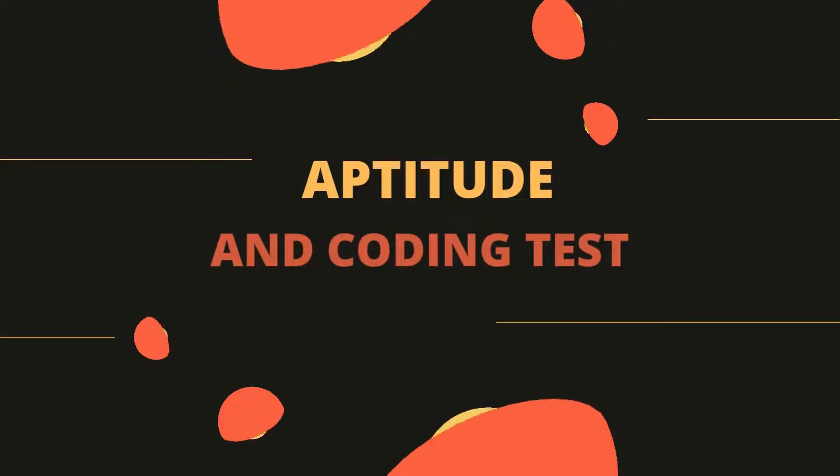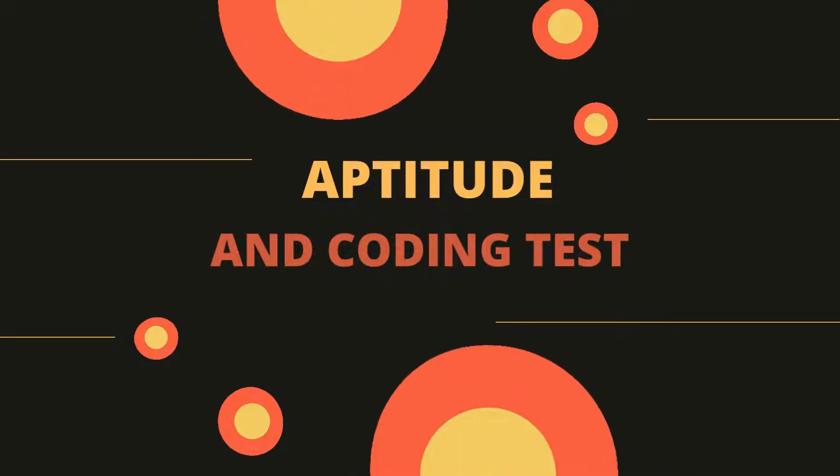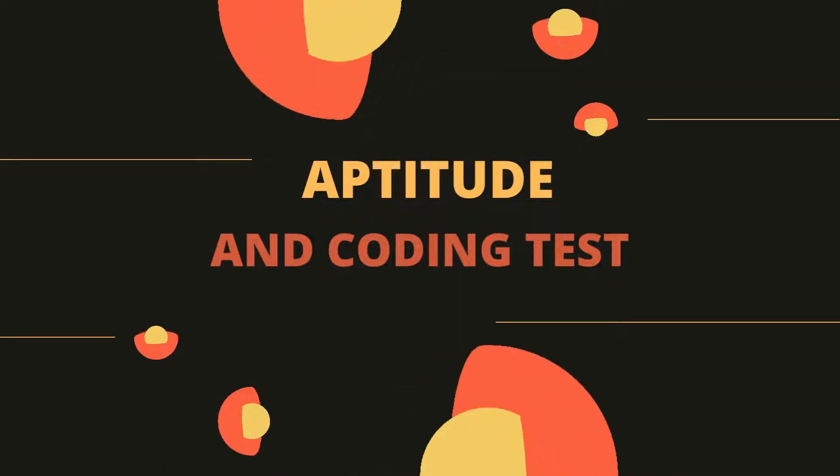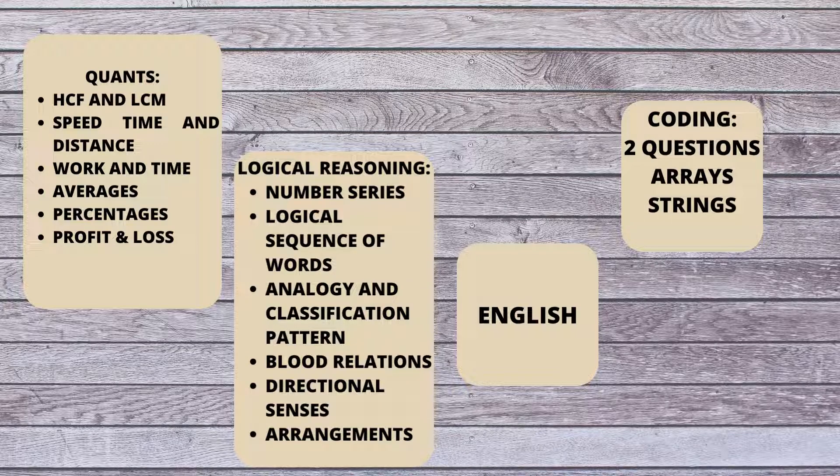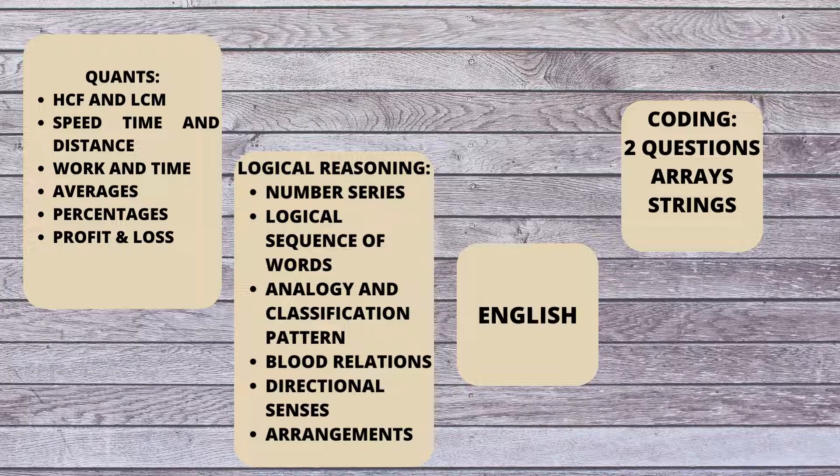The aptitude and coding test will be together. First you will have the aptitude test, and after finishing that you will do the coding questions. The quants section was of medium level, and questions were asked from HCF and LCM, speed time and distance, work and time, averages, percentages, profit and loss, etc.